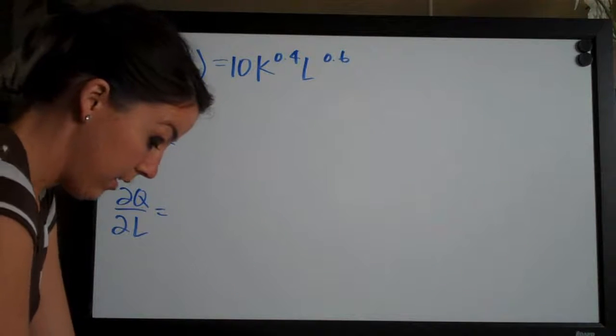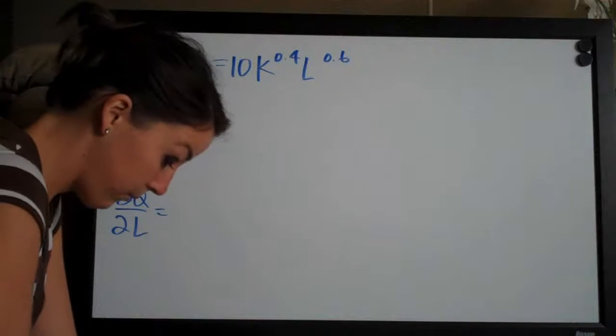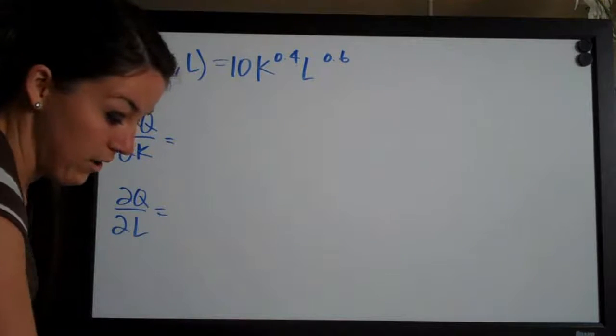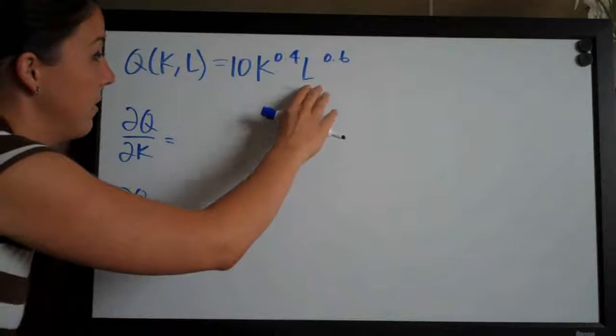2 to the 0.6, right? So this 2 to the 0.6 would simplify to 1.51 something, right?